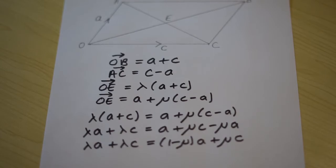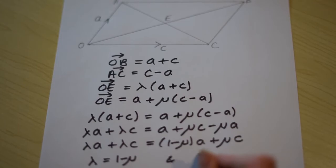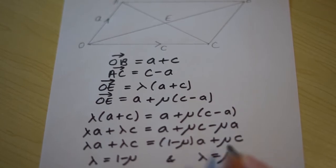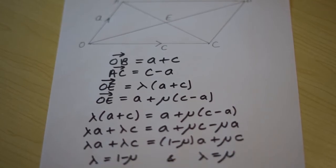So we can see by looking at the coefficients of A and C on both sides, that equals that from A and that equals that from C.